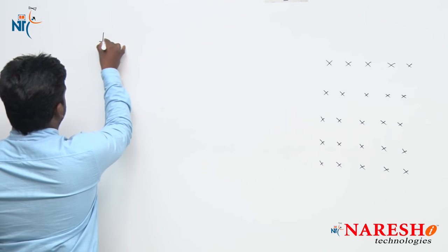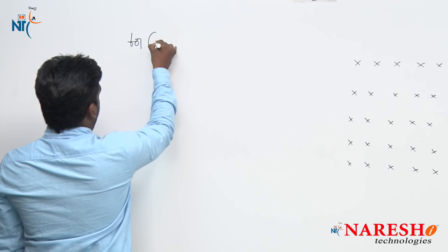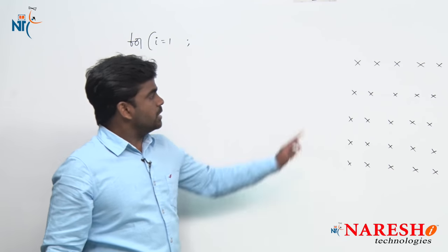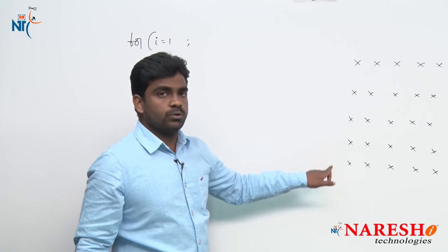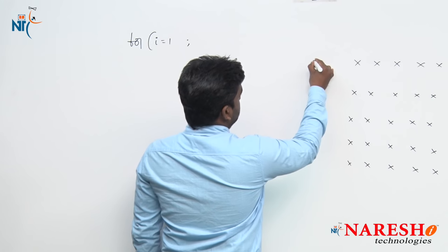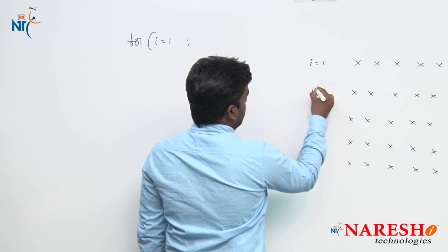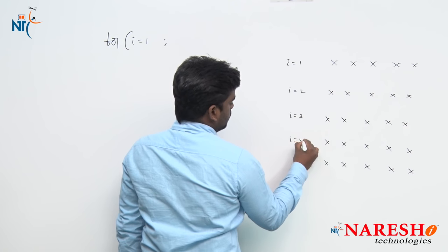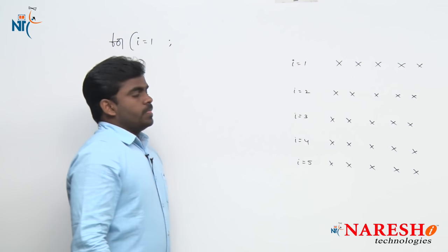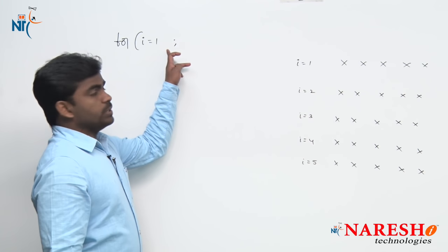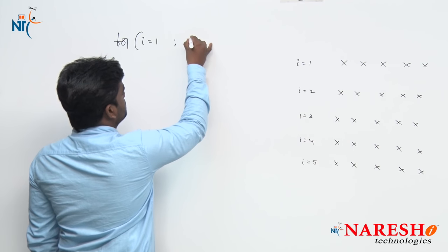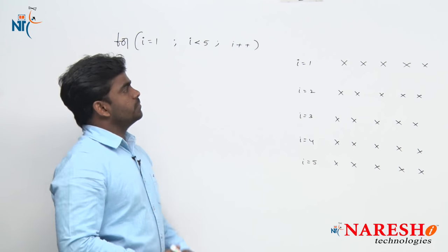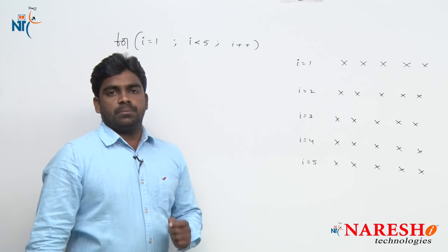For the outer loop, i value starts with 1. There are 5 rows, so: i equals 1, condition i is less than or equals to 5, i plus plus. The loop runs for i values 1, 2, 3, 4, and 5.